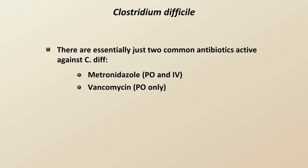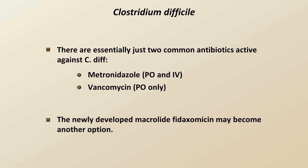Although oral vancomycin is thought to be slightly more effective than oral metronidazole, its use is limited by its astonishingly high cost of anywhere between $1,000 and $2,000 for a typical two-week course. The newly developed macrolide fidaxomicin may become a third option. It was approved for this use in the U.S. in 2011, shows excellent activity against C. diff, and like vancomycin, is minimally absorbed and has minimal impact on normal bowel flora.